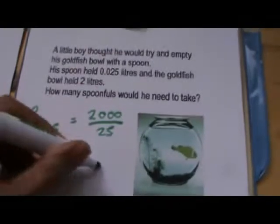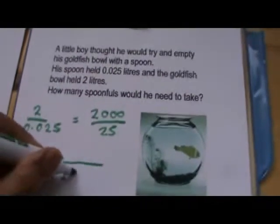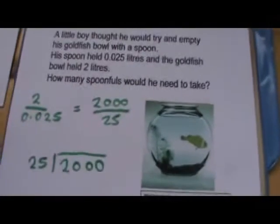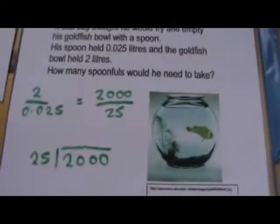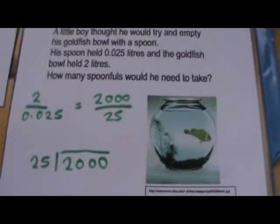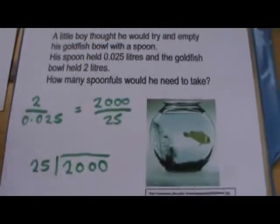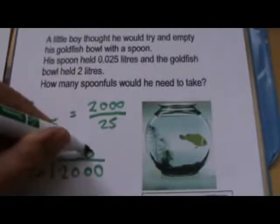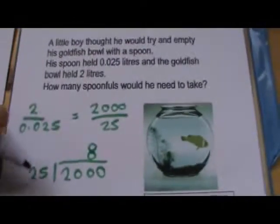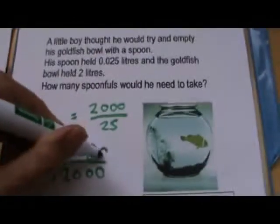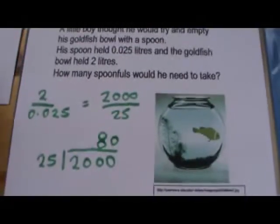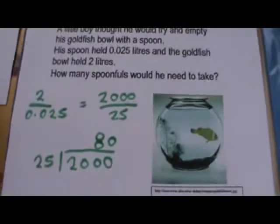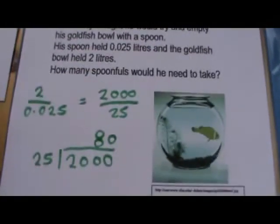It's now how many 25s are there into 2,000? So 25s into 200 go 8, don't they? Because 4 times 25 is 100. So 8 times 25 is 200. We've still got 25s into 0, which is 0. So the little boy will need 80 spoonfuls to empty the goldfish bowl altogether.